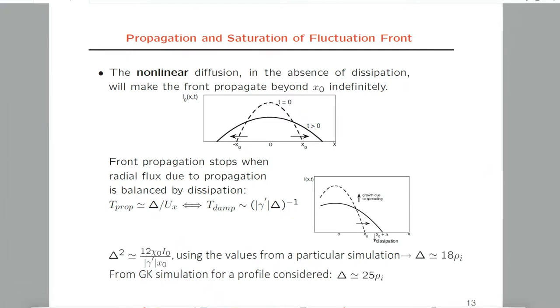We match these two timescales when turbulence spreading stops. From this simple relation, we get turbulence spreading going like 18 ion gyro radii for this specific set of parameters, while our first-principles gyrokinetic simulation has shown 25 ion gyro radii. Given the simplicity of our approach, this is pretty good, so we kept on doing this theory.